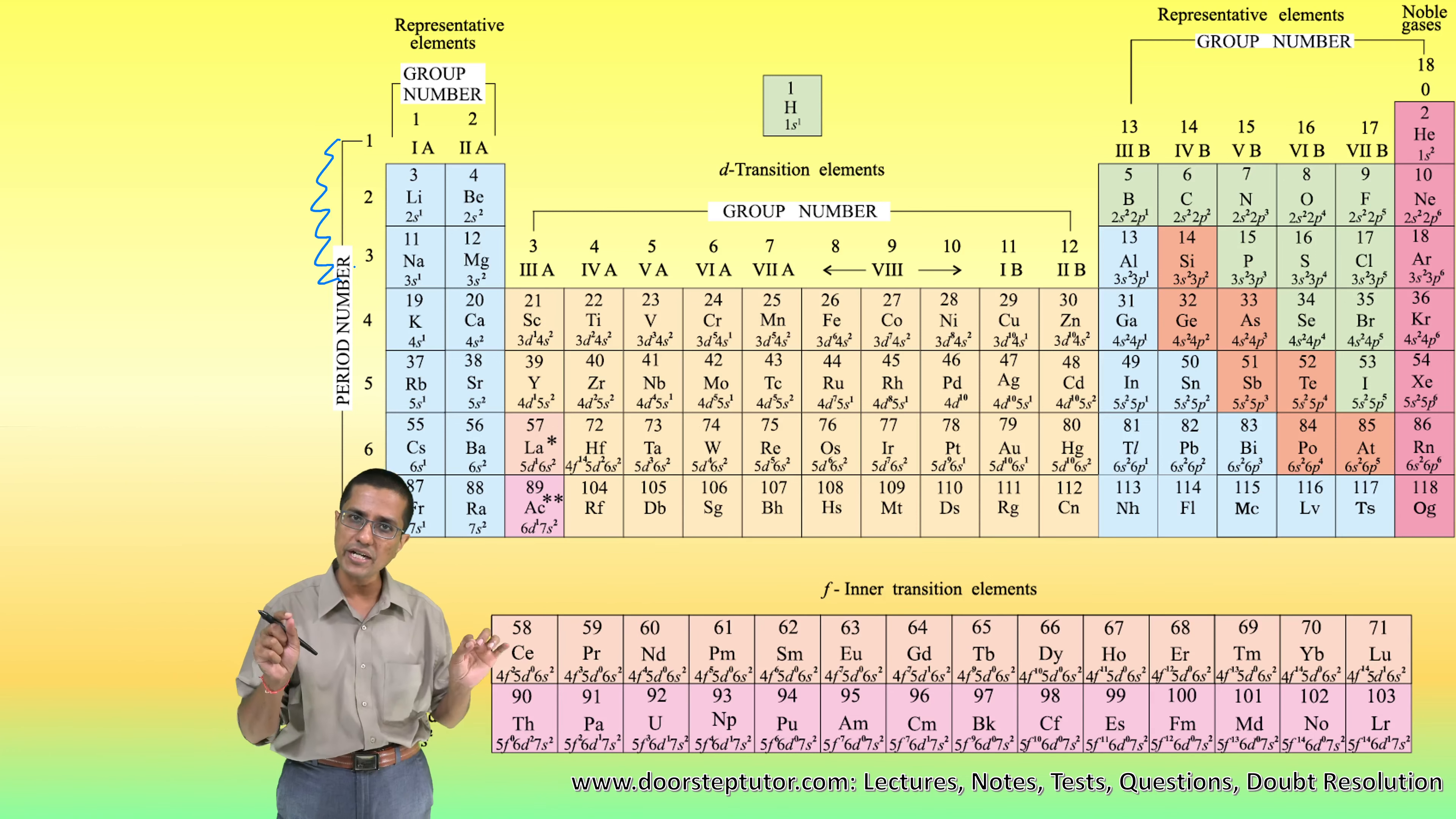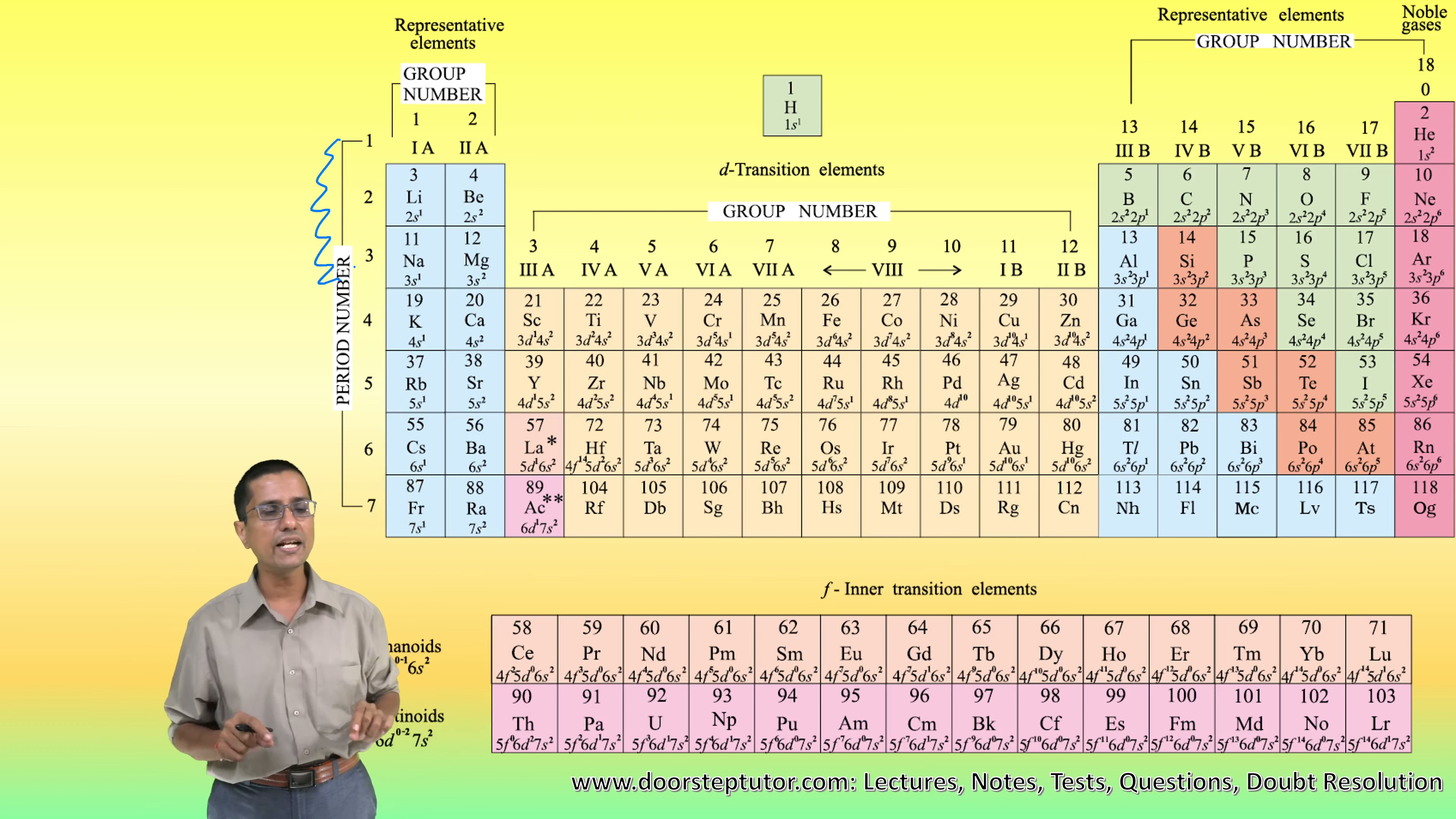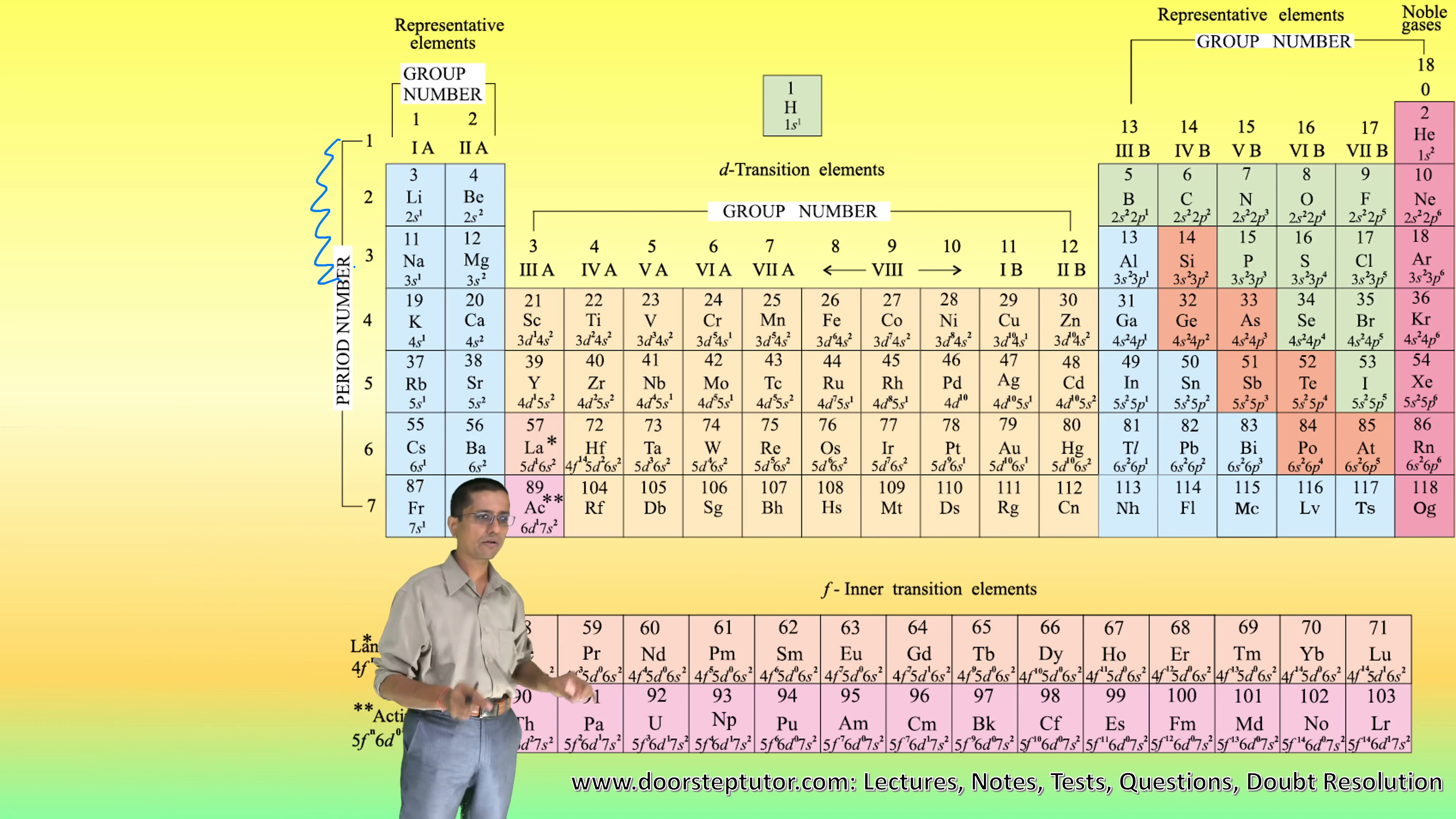So our new statement should be: the correct statement is valence electrons are those electrons which participate in chemical bonding.